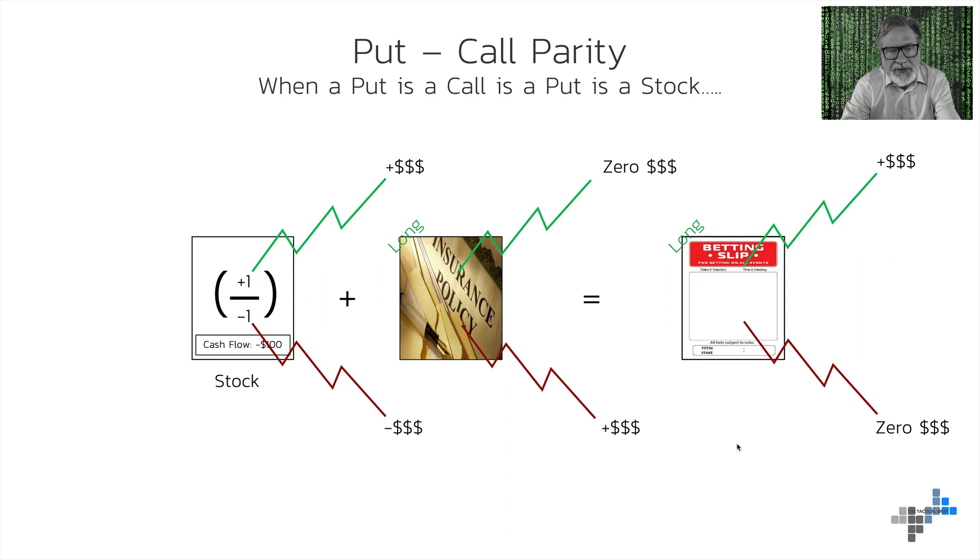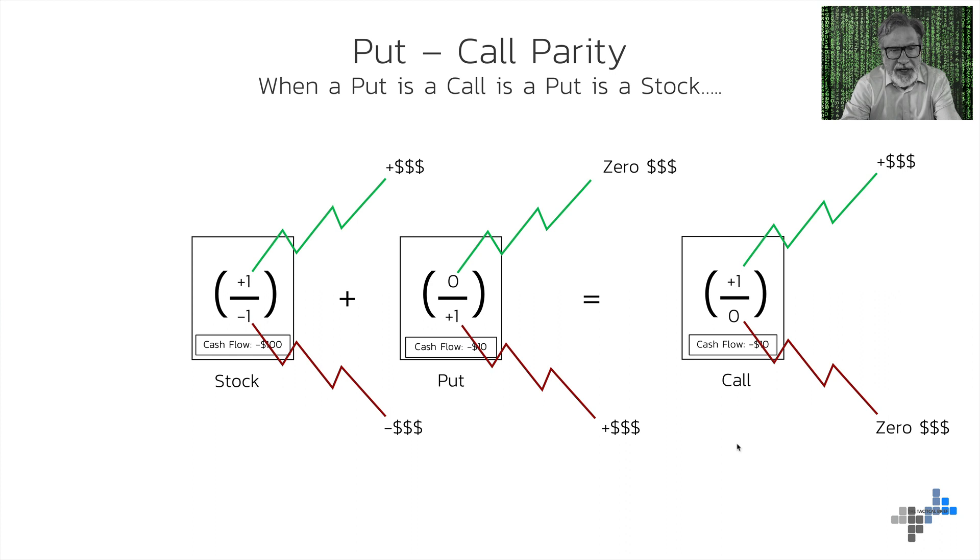Here you can see I've simply exchanged two easy symbols to represent what happens to the position if the market goes up and if the market goes down. The plus one simply means the market goes up, you make money, minus one means the market goes down, you lose money. In the second case, the market goes down, plus one, you make money and the market goes up, nothing really happens. You've paid a premium for your insurance policy, but that's it. So, if you simply add these two parts together, the plus one on the stock side, the zero on the put side, you end up with a plus one, which is the profile of a call. This is a call option.